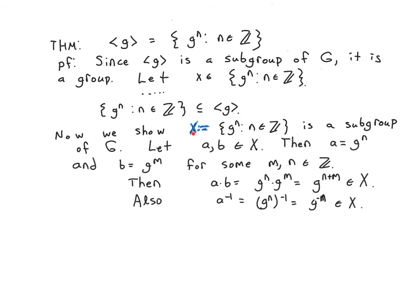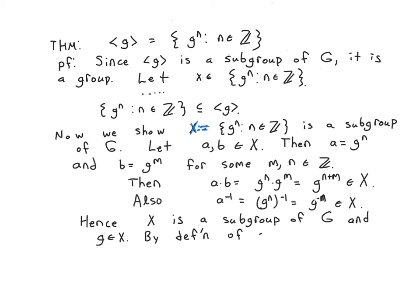Why? Because in both cases our exponent is an integer, so it's g to an integer power. Therefore it's in our set of g to integer powers. Hence, X is a subgroup of G. And little g is an element of X. Well, by definition of a smallest subgroup, we must have that the cyclic group set generated by g must be a subset of X — because we have a subgroup containing little g, so the smallest subgroup containing little g must be a subset of our subgroup. And so we have both inclusions. Therefore, we have our theorem.